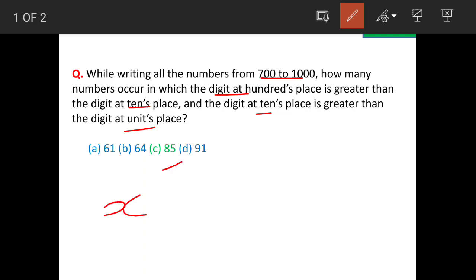The question is, let's say this is a number X, Y, Z because from 700 to 1000 all the numbers are going to be 3 digits because 1000 is excluded here. So as per question, X should be greater than Y and Y should be greater than Z. When we formulate the number, this is the condition.